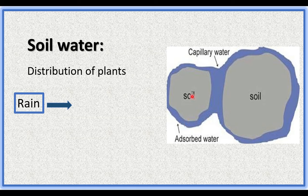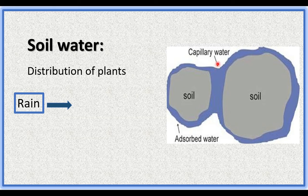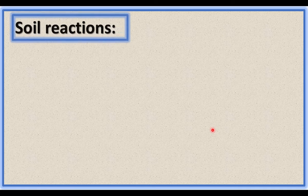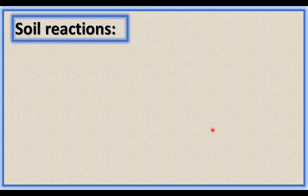Between the soil particles there is micro-capillary space. This space is filled with water called capillary water. This capillary water is available for plants and can be absorbed by the root system.